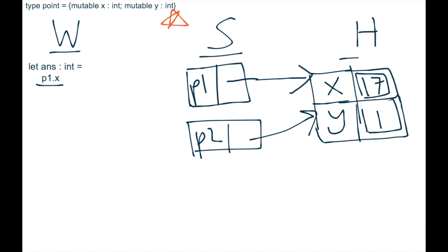We look up P1 and we find its value in the heap. Allocate that with the arrow from the workspace. And now we can find the .x by following the pointer to the heap.